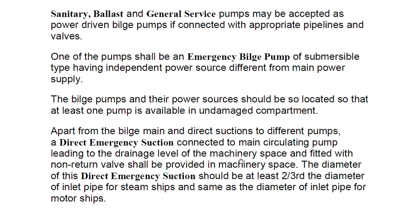Apart from the bilge main and direct suction to different pumps, a direct emergency suction connected to the main circulating pump leading to the drainage level of the machinery space is required, fitted with a non-return valve. The diameter of the direct emergency suction should be at least two-thirds the diameter of the inlet pipe for steam ships, and the same as the diameter of the inlet pipe for motor ships.